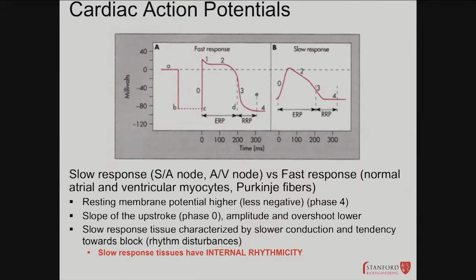You'll notice that the resting potential of the slow response fibers is higher than the fast response ones. The resting potential is about -80mV in the fast fibers and about -60mV in the slower ones. That difference exists because there are spontaneous ion channels in slow response cells — they slowly, gradually depolarize by themselves, then fire, then come back down, and the cycle repeats automatically.